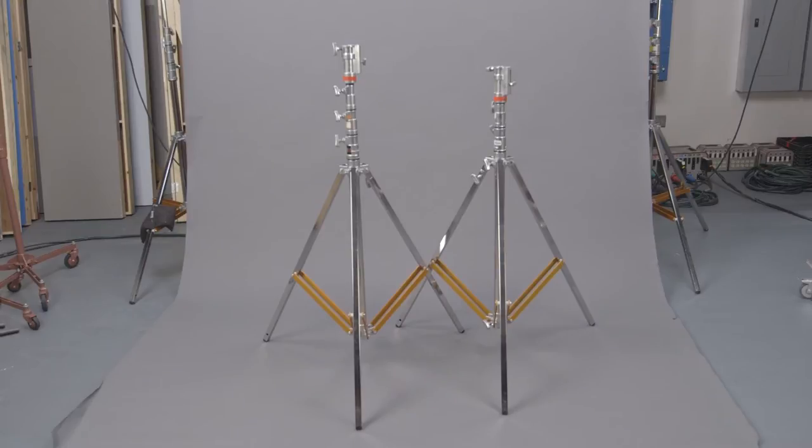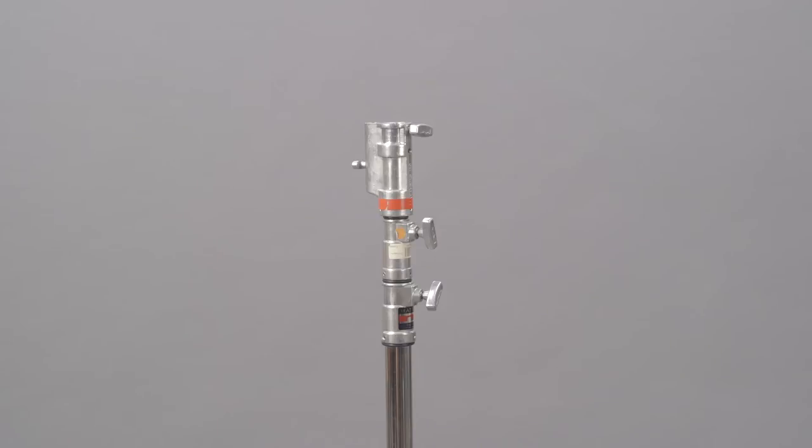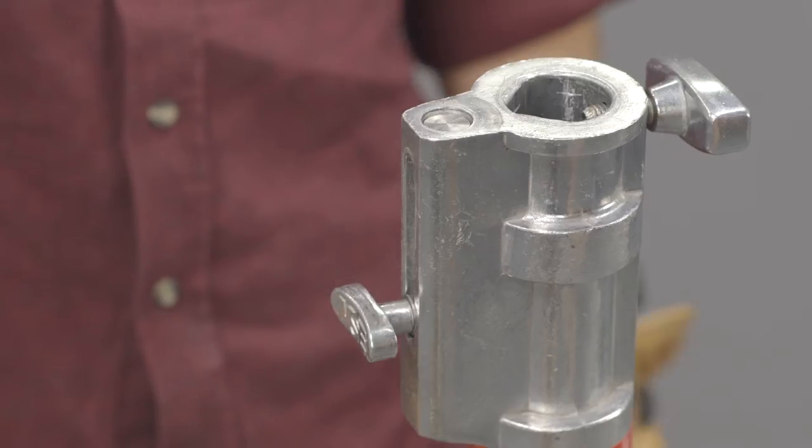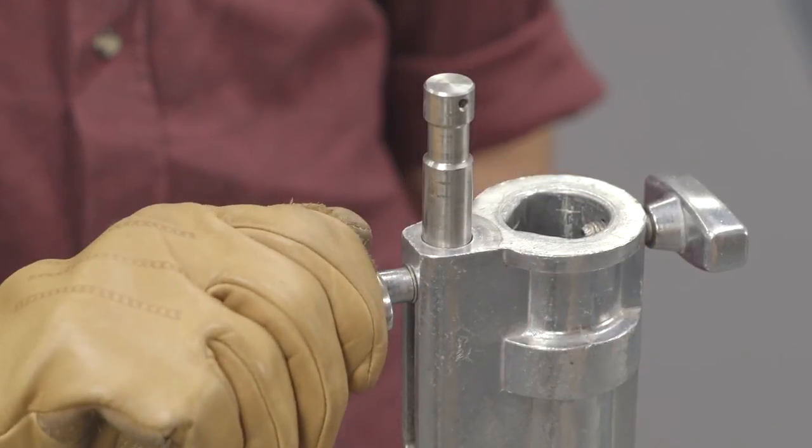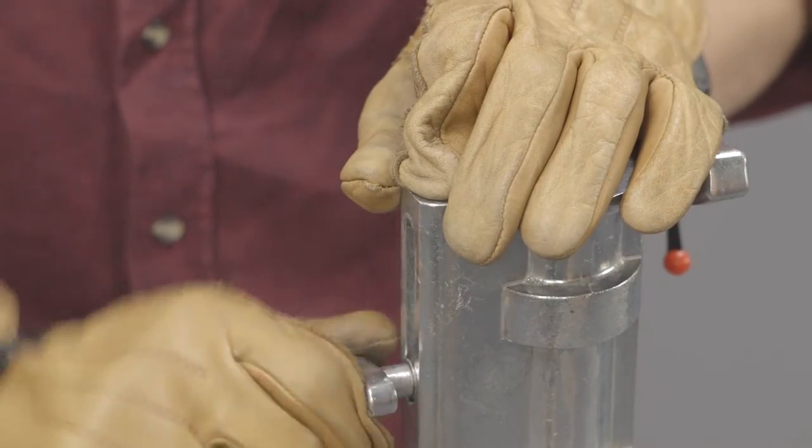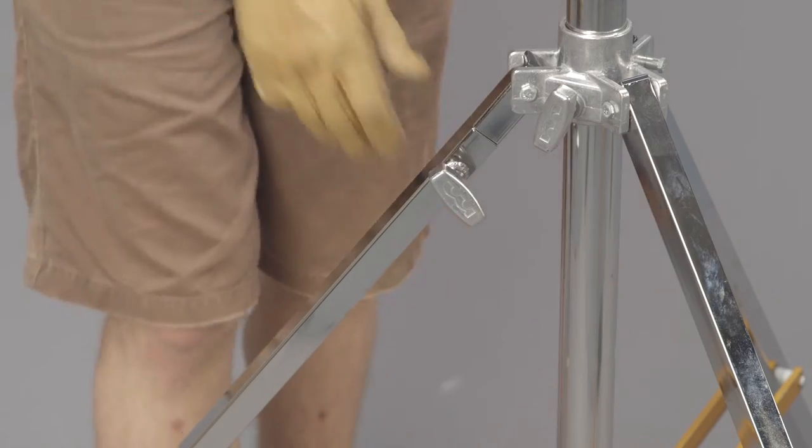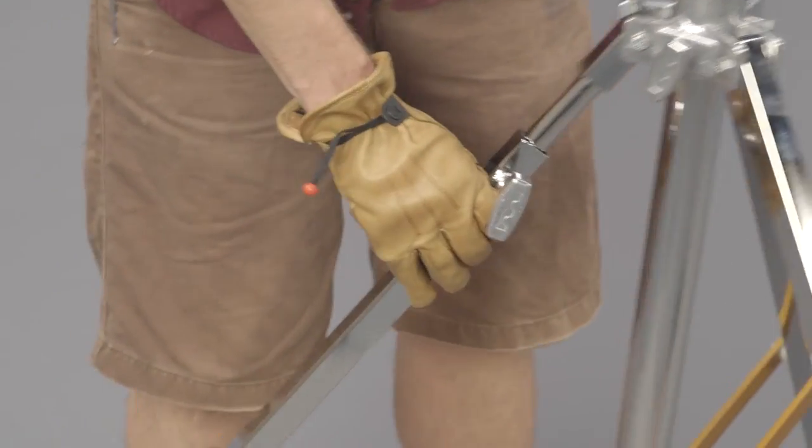Combo stands come in many sizes. This is a two riser combo stand. Combo stands have a junior receiver for big lights and a pop-up baby pin for smaller lights. They come with a Rocky Mountain leg.